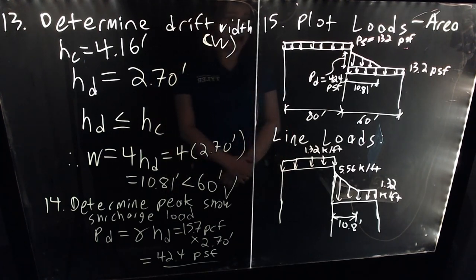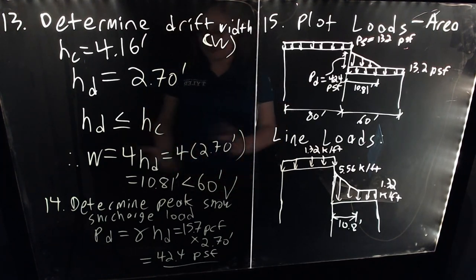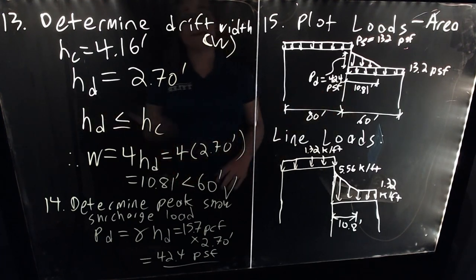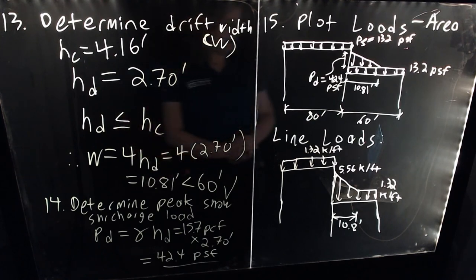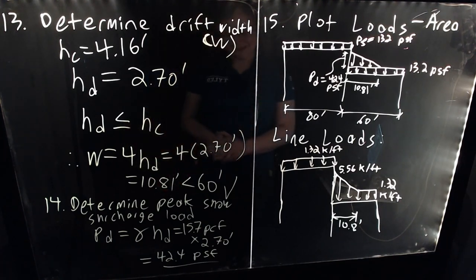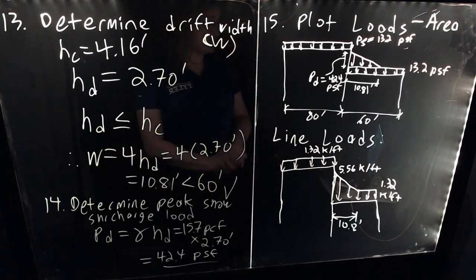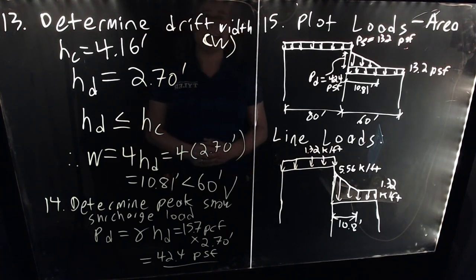As a review: we started with a flat-roof building with upper and lower roofs, determined the risk category and importance factor, ran through all flat roof snow load calculations, adopted the minimum value of 13.2 PSF, determined drift calculations were necessary, ran through leeward and windward cases, and culminated in area loads and line loads. Hopefully you learned a little about snow loads. Feel free to ask questions. And please don't build any plutonium warehouses in downtown Portland. Thank you — I'll see you all again soon.